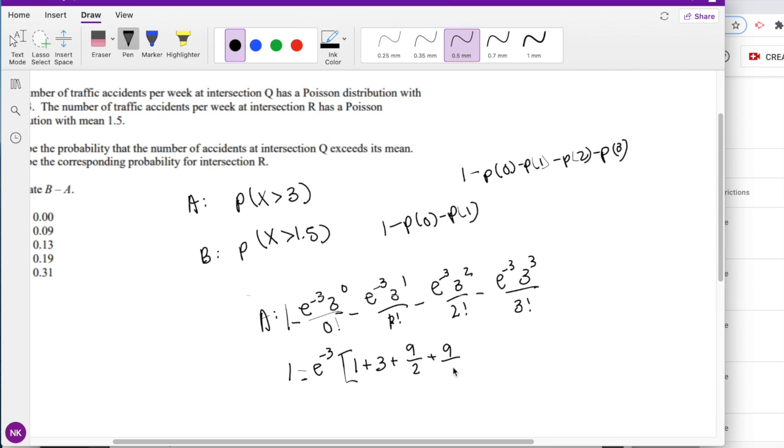When I plug in, this is the fastest way. This is 27. So this is approximately equal to 0.35276.